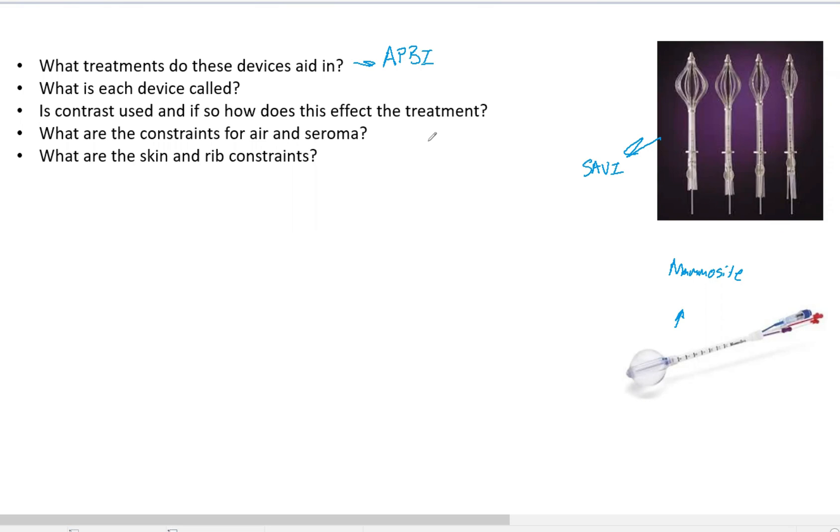Is contrast used and how does it affect it? Iodine can be used for contrast in APBI and it can lower dose compared to TG-43 by three to five percent. However, the prescription does account for this.